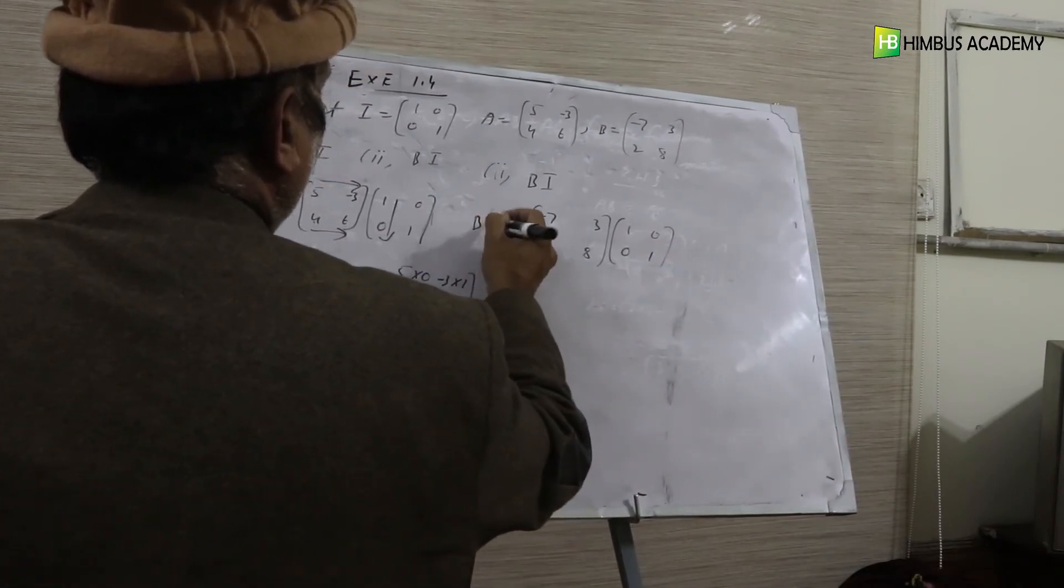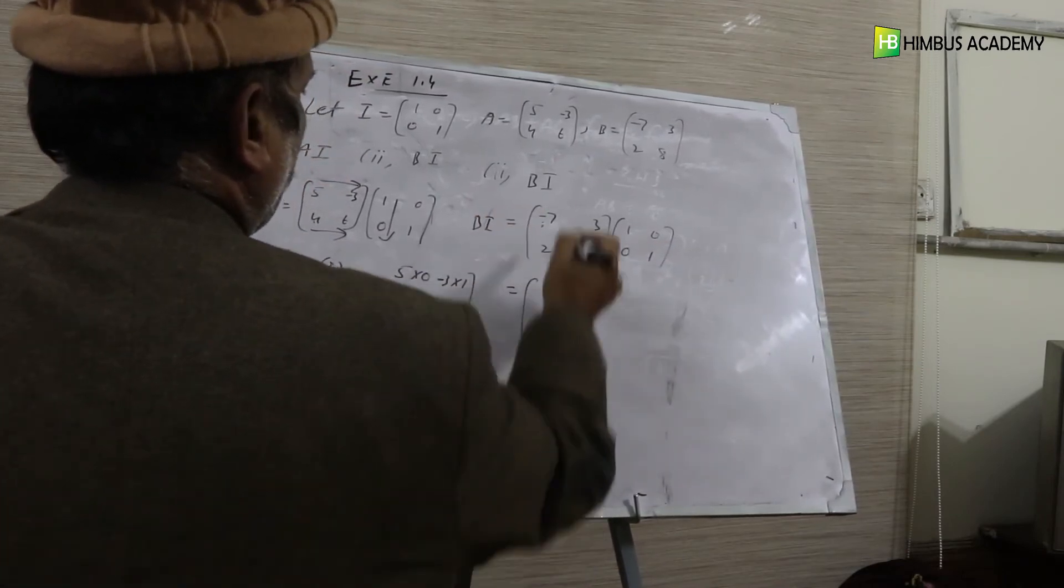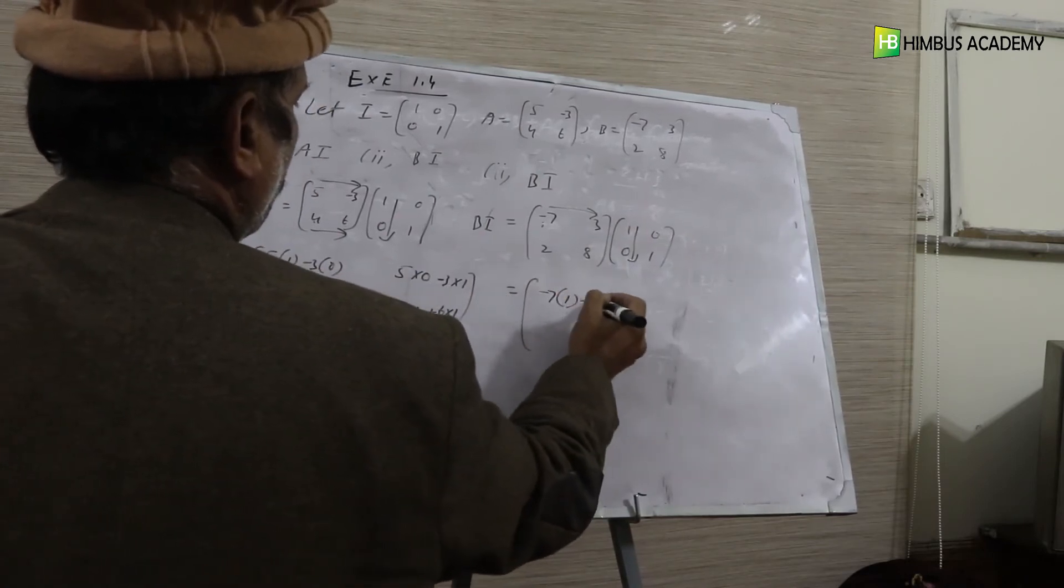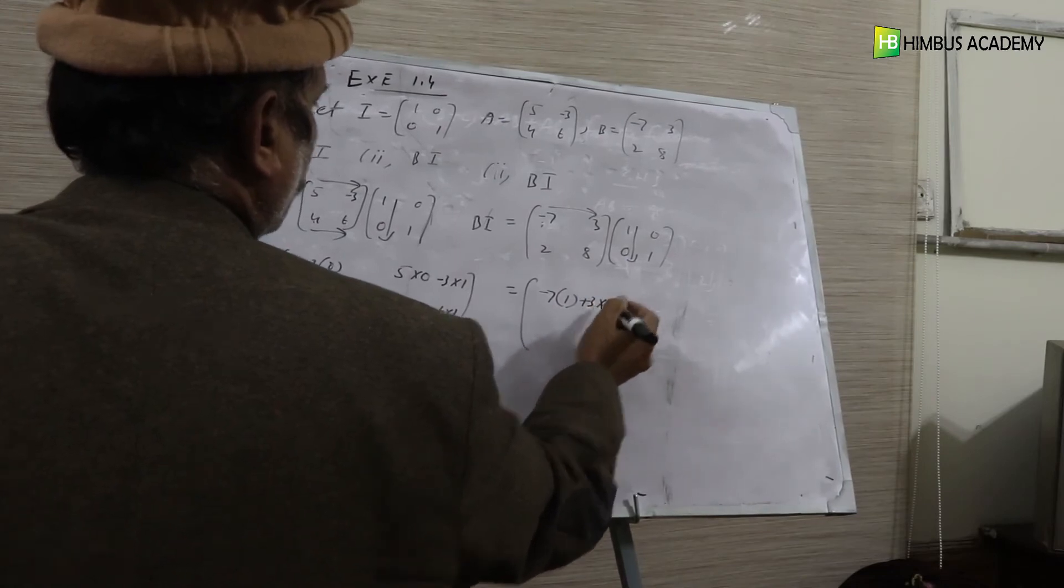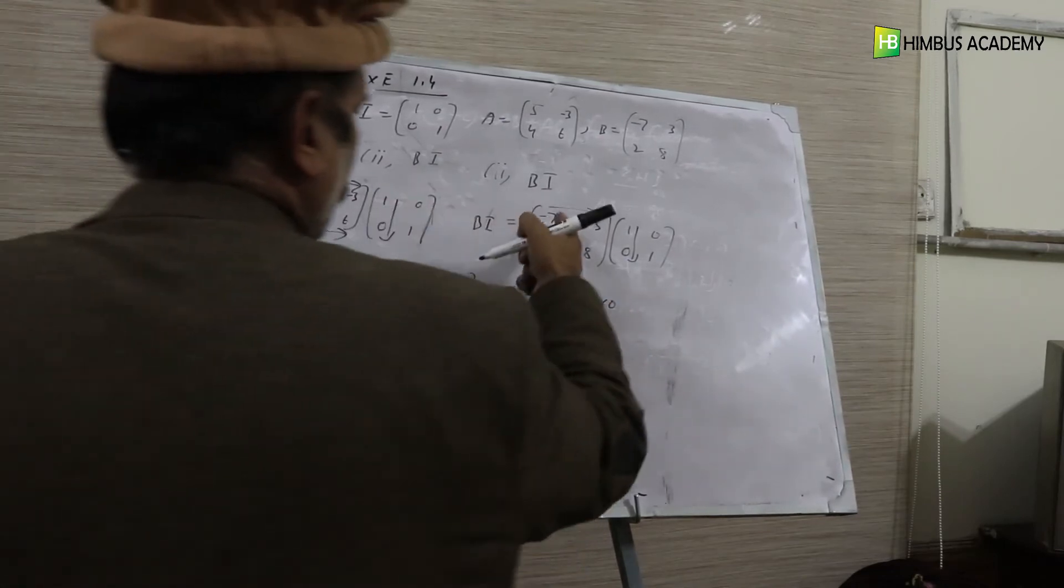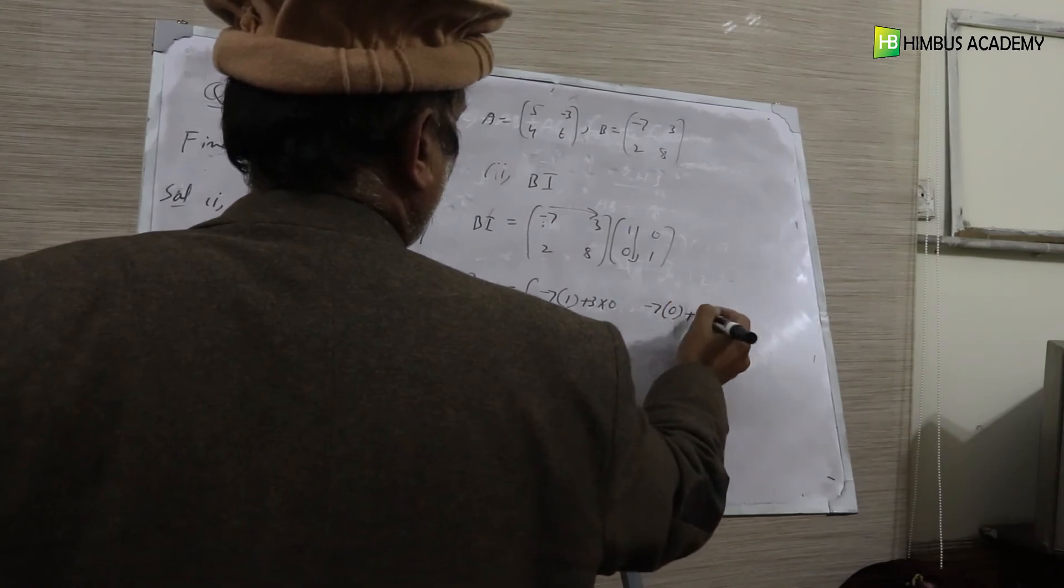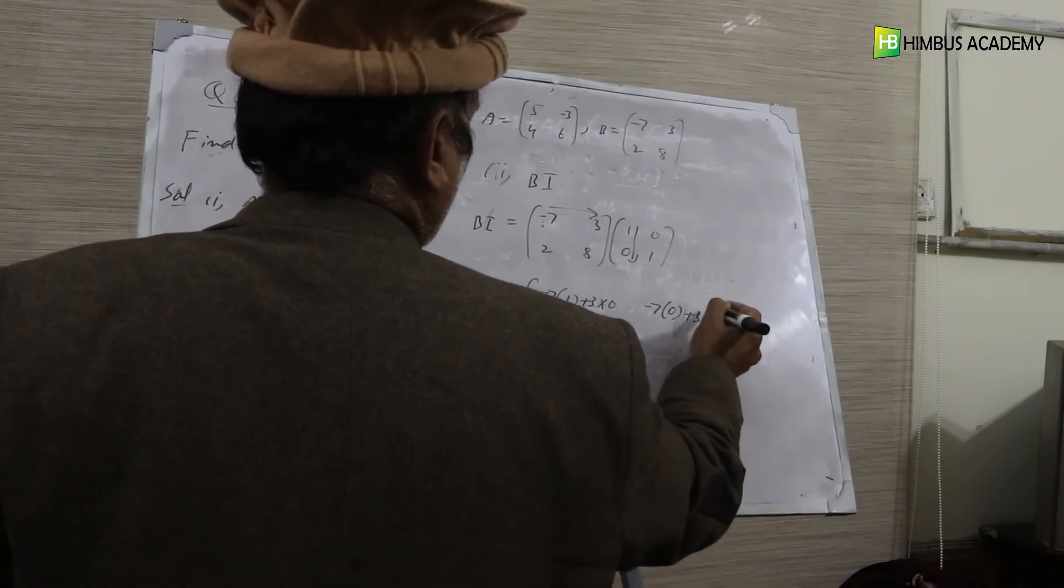First row with first column: minus 7, 1, 0 plus 3, 0, 0. First row with second column: minus 7, 0, 0 plus 3, 1, 0.